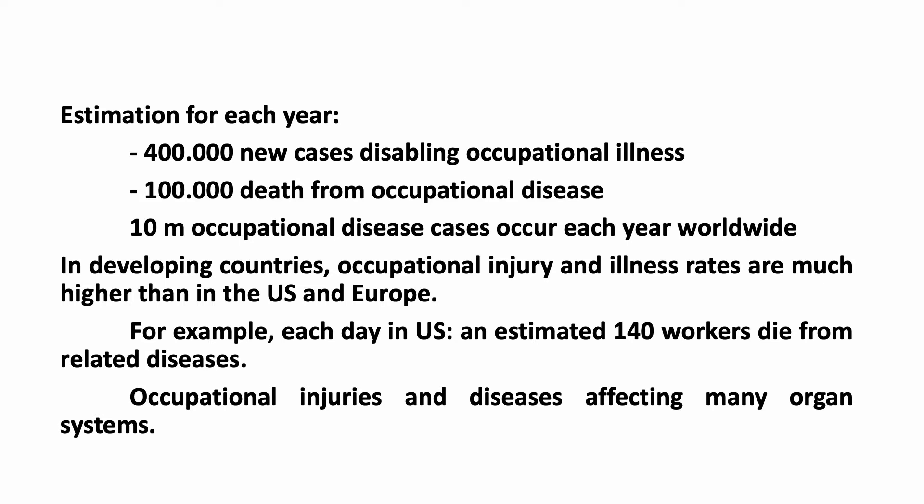Occupational injury and illness rates are much higher than in the US and Europe. For example, each day in the US an estimated 140 workers die from work-related diseases. Occupational injuries and diseases affect many organ systems.